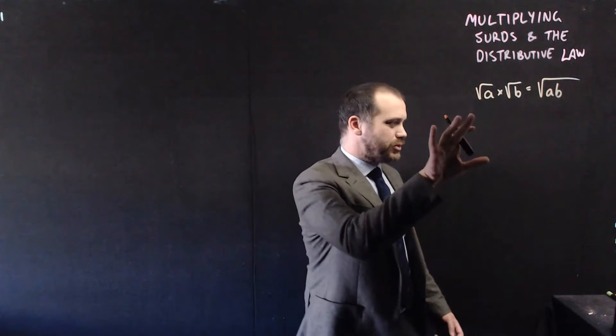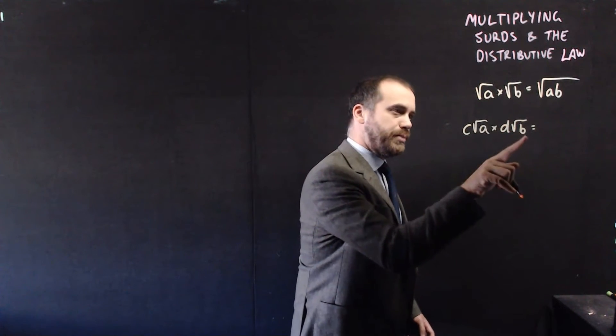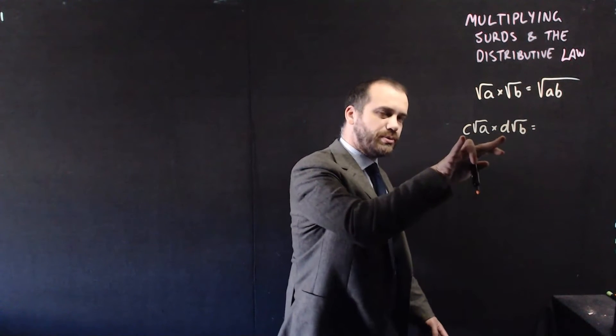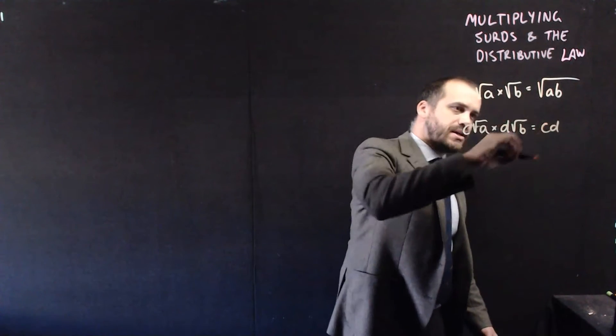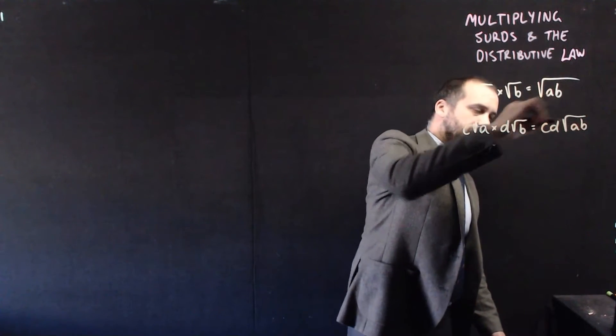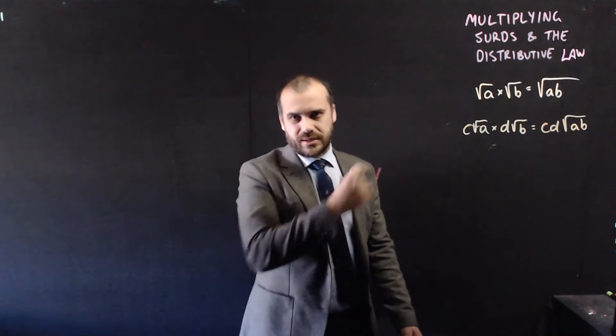Now we can go one step further with this rule. If you had C root A times D root B, the answer would be the bits outside of the surds multiplied by each other, C times D, and then the bits inside the surds multiplied by each other, AB. These two rules are going to get us through any kind of multiplication when it comes to surds.